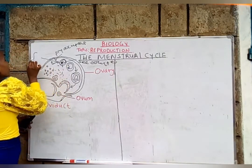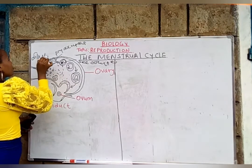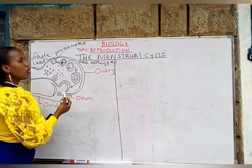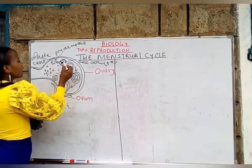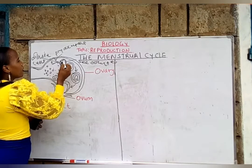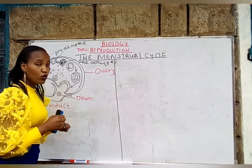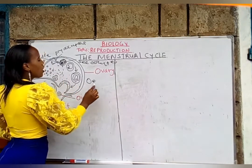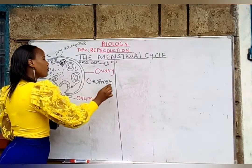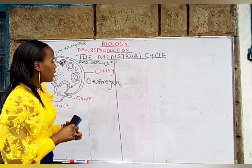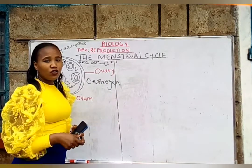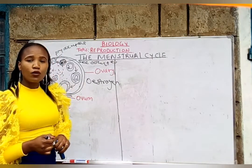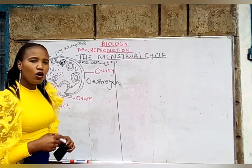It is surrounded by follicle cells and is also filled with fluid. This fluid contains a hormone known as estrogen. When estrogen is in high concentration, it stimulates the production of another hormone known as luteinizing hormone.